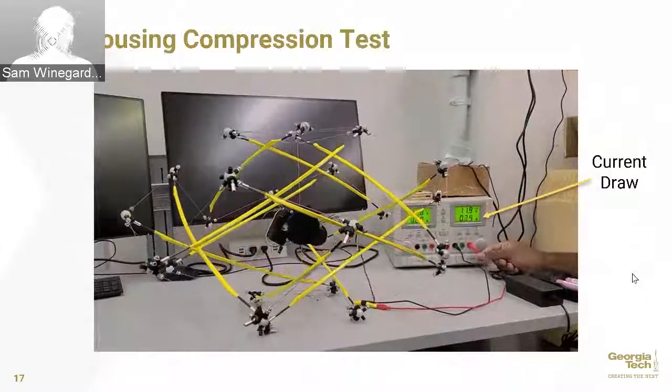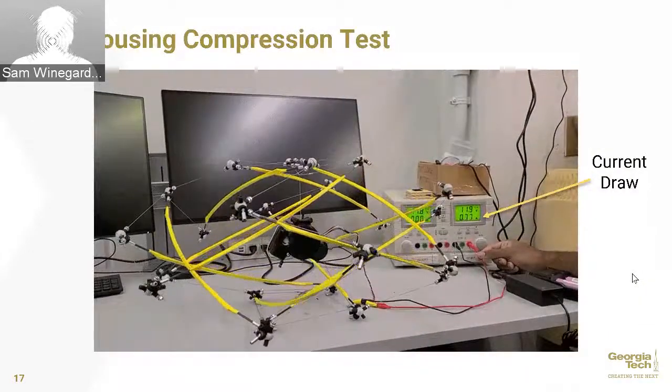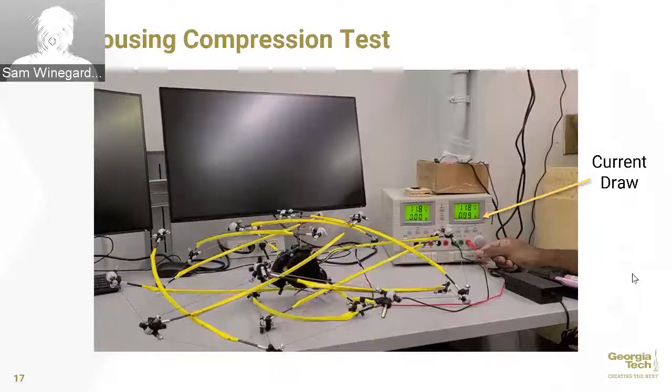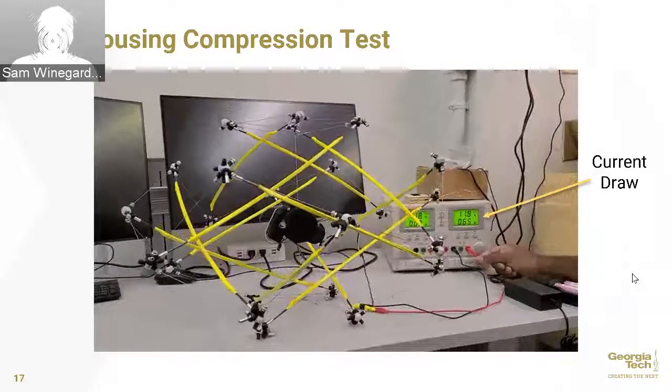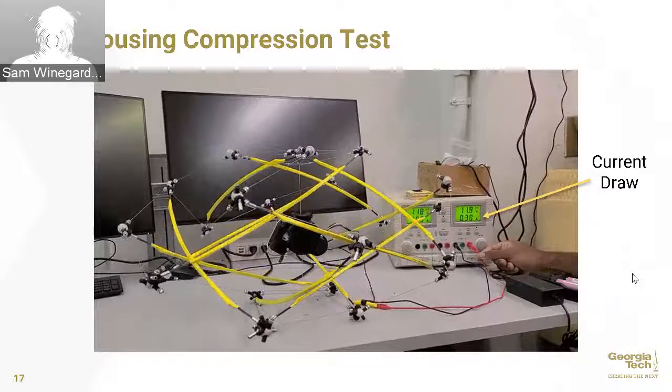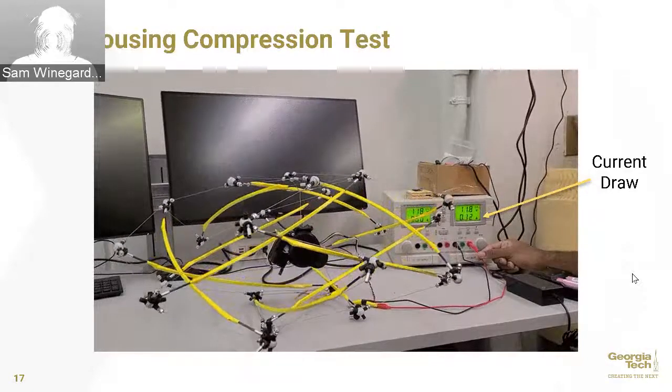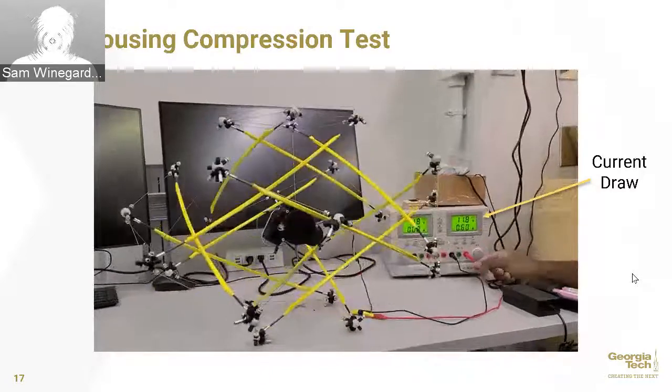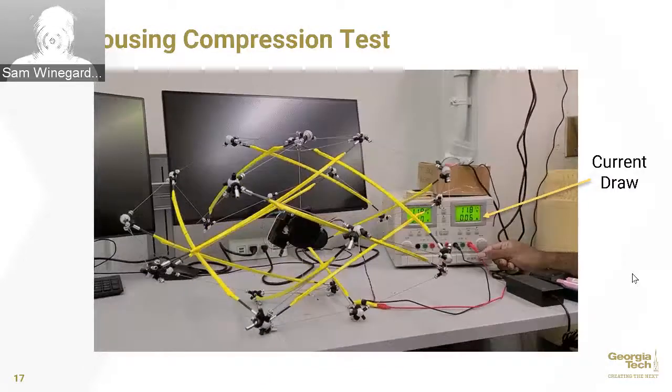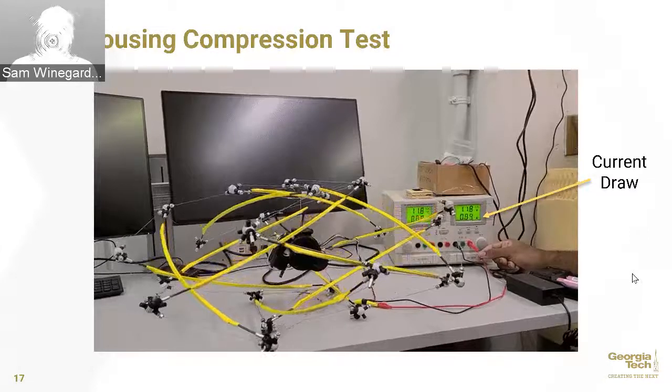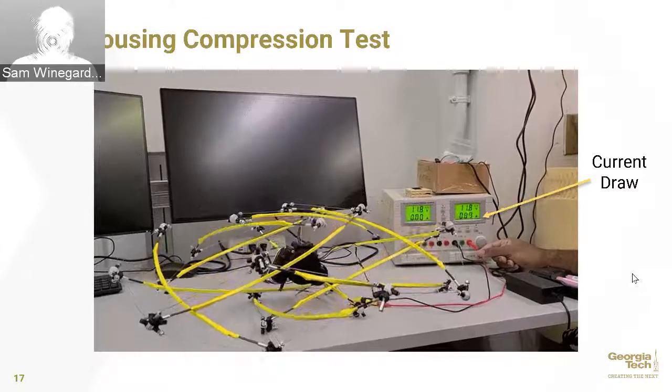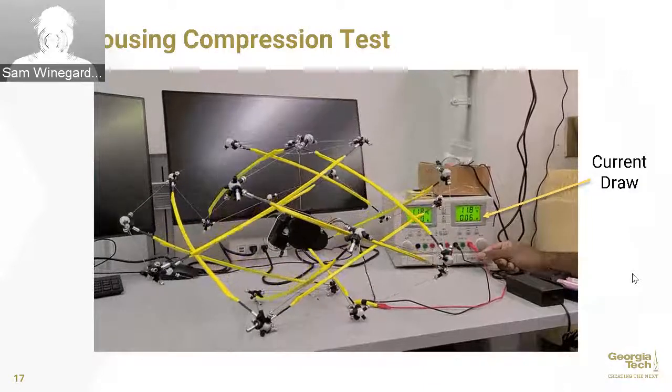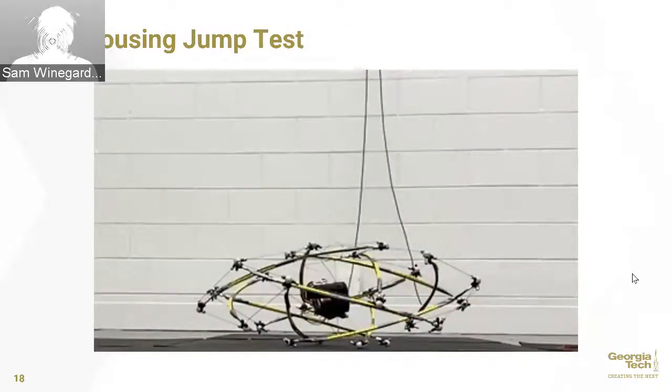Here's a quick video of our compression test for this new motor housing, and I've hooked it up to a power supply that shows you how much current is being drawn throughout the compression. Notice that at its peak, the motor isn't drawing more than 1,000 milliamps of current, and that's less than half the stall current. So we could definitely increase the stiffness of these bars to get more jumping, and that might be necessary too because this motor housing is a little heavier.